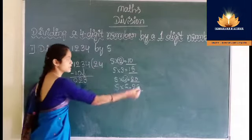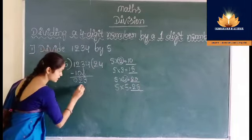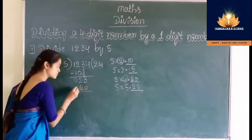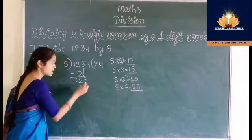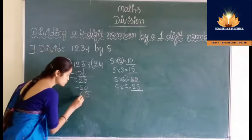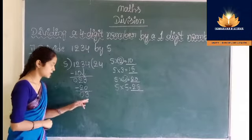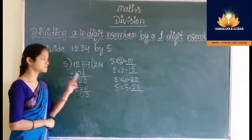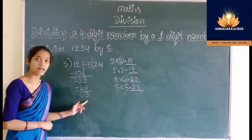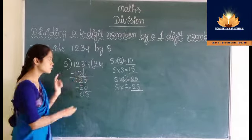Then write the product, that is 20, below this 23. Now subtract 20 from 23: 3 minus 0 is 3, 2 minus 2 is 0. This 3 is less than 5, so we cannot divide — then bring down the next number, that is 4.